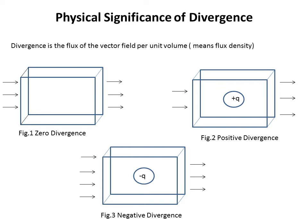In figure 3, we place a negative charge inside the cube. The number of entering lines is greater than the number of leaving lines. In this case, we have negative divergence.